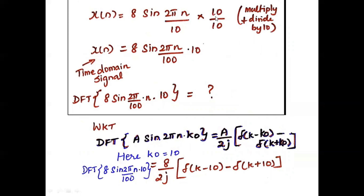When multiplying and dividing by 10 in the denominator, we get x(n) = 100·sin(2π·n·10). This x(n) is the time domain signal, and that signal we have to give as input to the FFT.